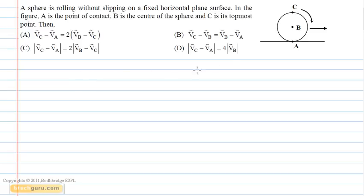Since the sphere is rolling without slipping on a fixed horizontal plane surface, the velocity of the point of contact is given by Va equals V minus omega r, that is equal to zero.